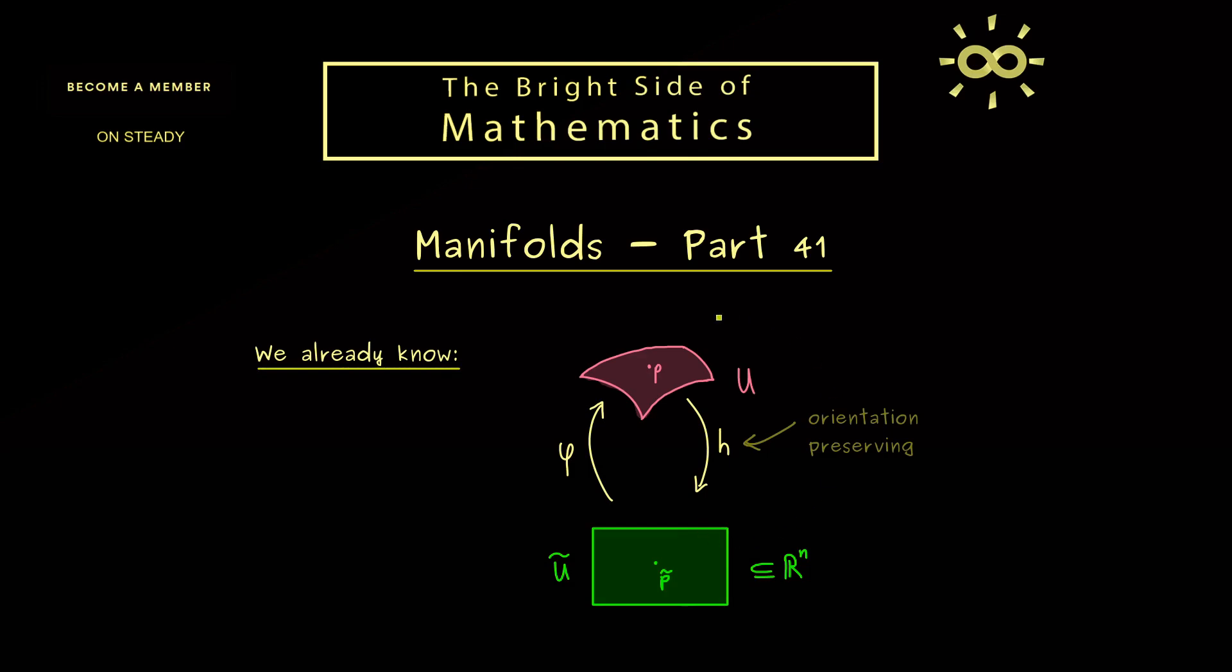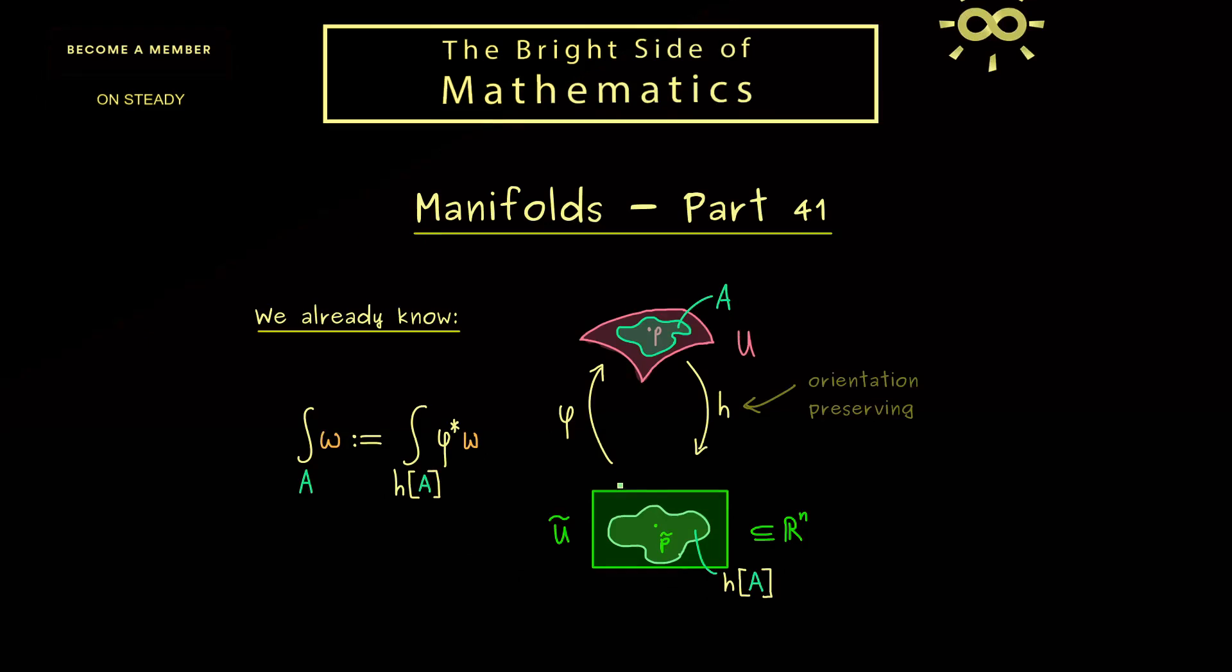If we have a single chart of a manifold, we can already do the integration in it. For a set A inside U, the integration already makes sense. We need to look at the corresponding image in R^n, so H of A. Then for any volume form omega on the manifold, we can define our integral using the integral we already have in R^n. The short notation uses the pullback phi star omega. We have already shown this is well-defined, which means it does not matter which chart we choose. But we still need that this integral on the right-hand side makes sense in R^n, and this is exactly what we will talk about today.